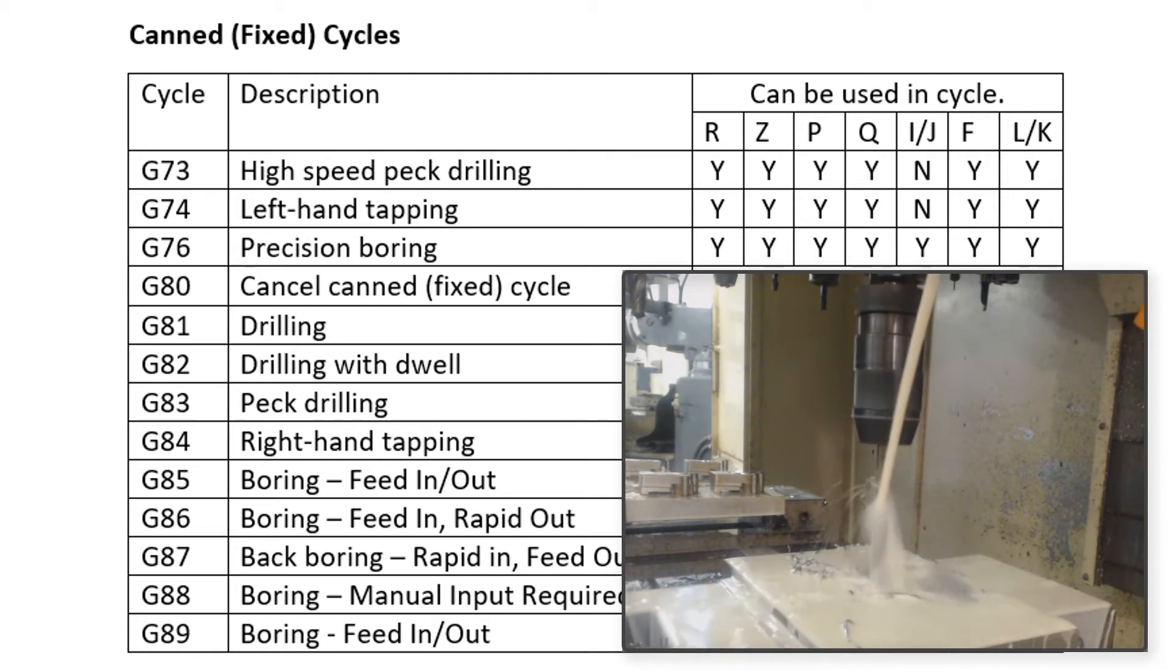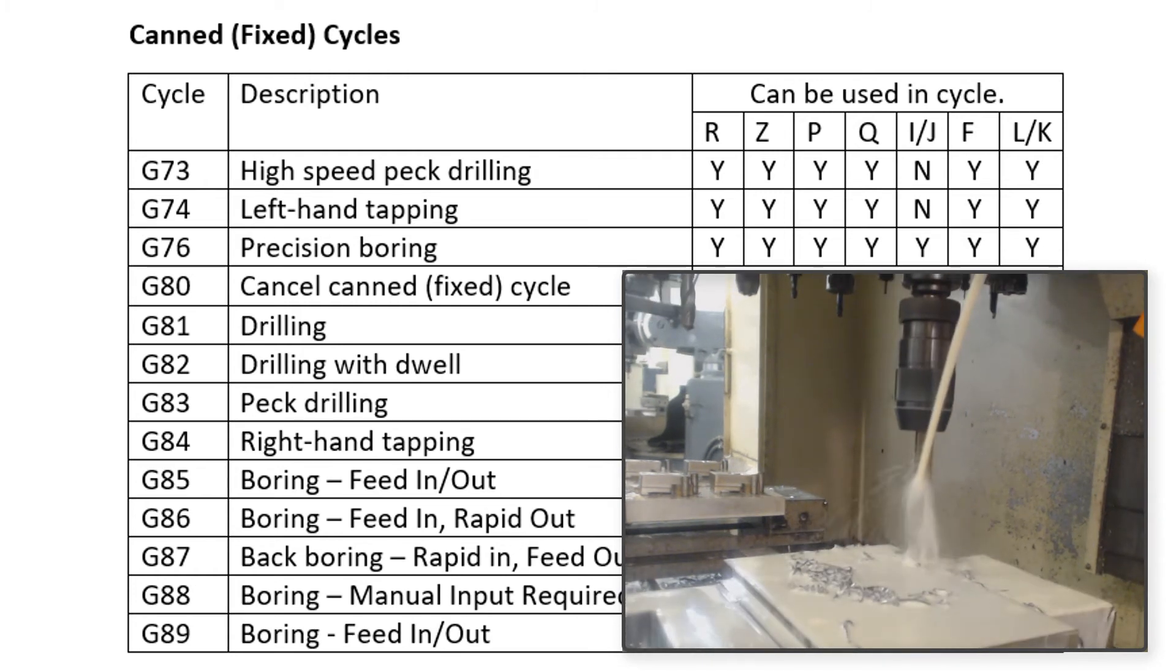This cycle should be used when it is critical that the chips be removed from the hole between each peck, or if you are uncertain of how the material will chip. It is safest to first program a G83, and then if the material allows for it, change the cycle to the G73.